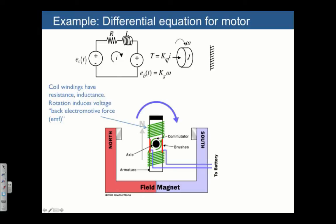There are two constants of interest. Km is also known as the motor constant. It describes the proportionality between the current and the torque. The second is kg, or the generator constant, which describes how much back electromotive force or back voltage is produced as a function of the velocity of the rotor.